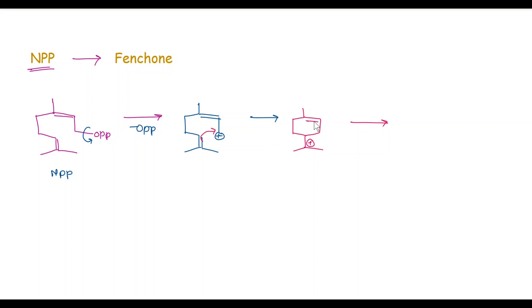In the next step, this pi bond attacks on this carbocation and we get a tertiary carbocation here and this moiety. This moiety is called pinyl cation.